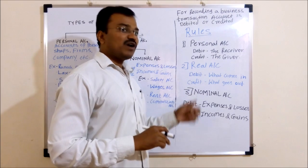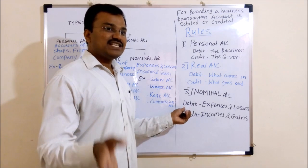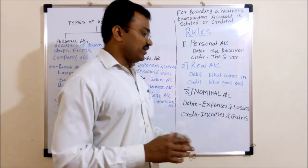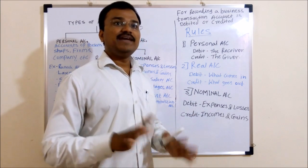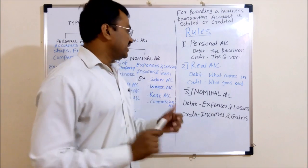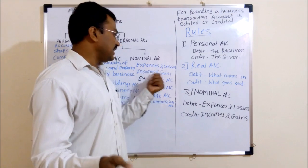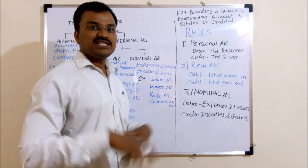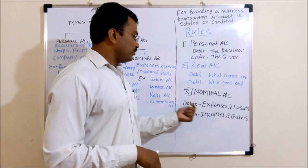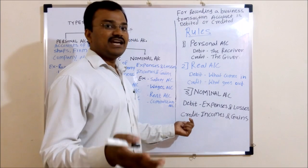Third type of account is nominal account. The rule for nominal account is: debit expenses and losses, credit incomes and gains. In case of nominal account, you debit all expenses and losses, and credit all incomes and gains. Since nominal account includes all accounts of expenses, losses, incomes, and gains, it is simple to relate this rule.